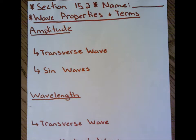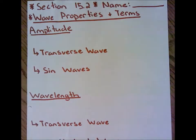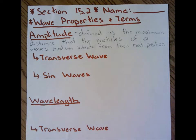We'll get started with some formal definitions. In section one, I outlined and went over some of these definitions, but I never gave a formal writing. So we start with our basic terms associated with a wave. This first term is amplitude, which is defined as the maximum distance that the particles of a wave's medium vibrate from their rest position. Simply put, the amplitude is essentially the height of a particular wave.